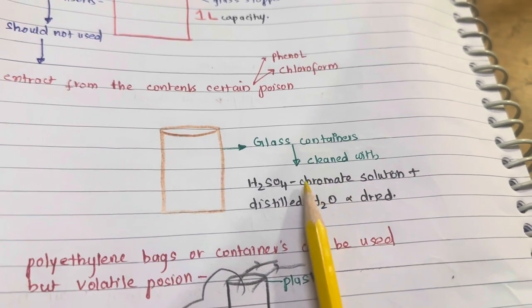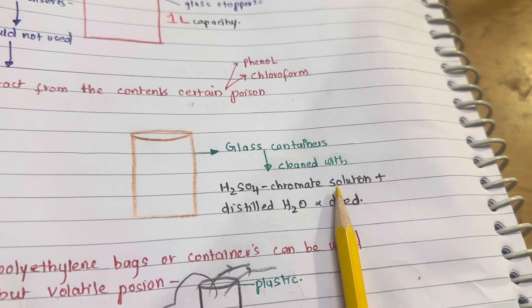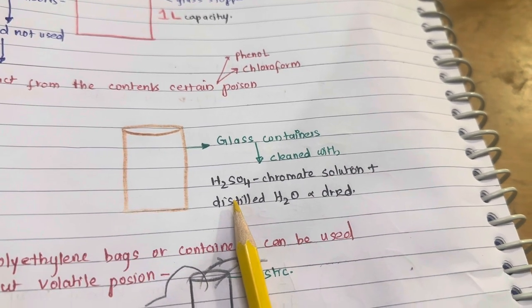Glass containers should be cleaned with sulphuric acid chromate solution, rinsed with distilled water, and dried.